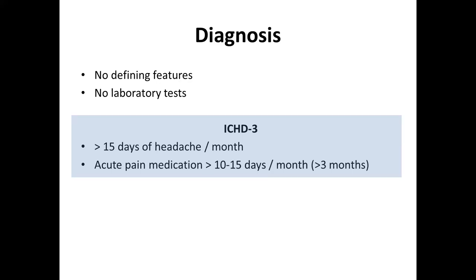It's worth clarifying that this diagnosis is often made in retrospect. If I see someone in clinic with a background of migraine who is taking lots of painkillers because their migraines have gradually increased in frequency, at that point we can only say they have probable medication overuse headache, because the diagnosis can only really be confirmed once you've withdrawn the painkillers and seen an improvement in headaches. If there's no improvement, you'd be much less likely to attribute those headaches to the medication.